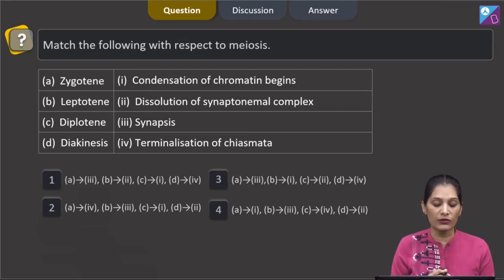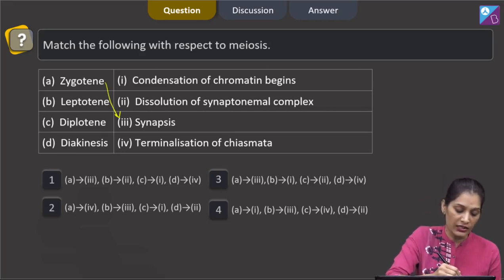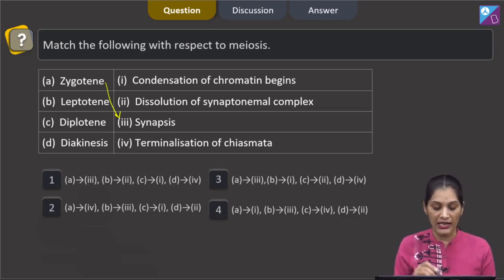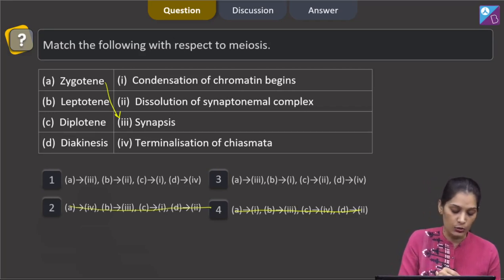Let's move to the next question. Match the following with respect to meiosis. A - zygotene, B - leptotene, C - diplotene, D - diakinesis. On the right hand side you will find condensation of chromatin begins, dissolution of synaptonemal complex, synapsis, and then terminalization of chiasma. So zygotene, this is the stage where synapsis takes place which is pairing of homologous chromosomes. So A matches with third. Now try to find out - A is matching with third in two options only, that is option 1 and 3, so these options are ruled out.